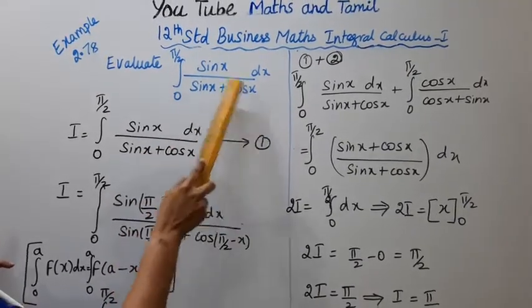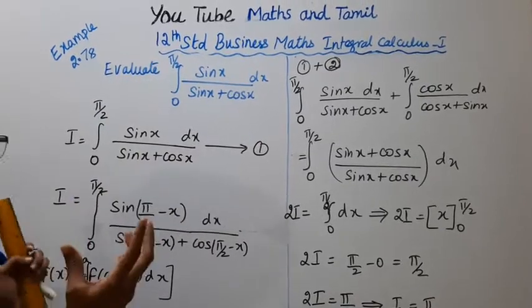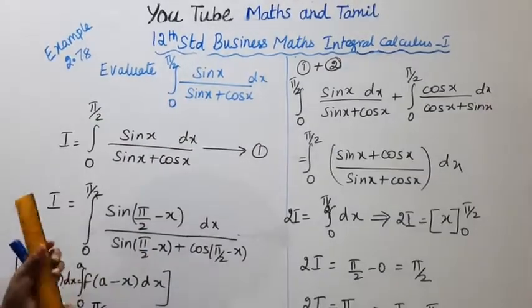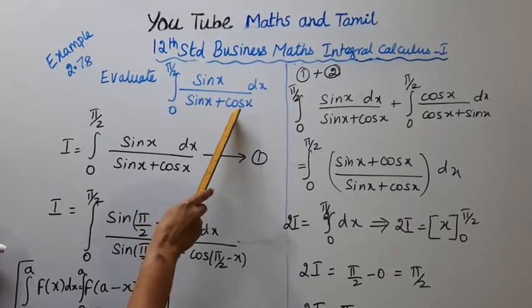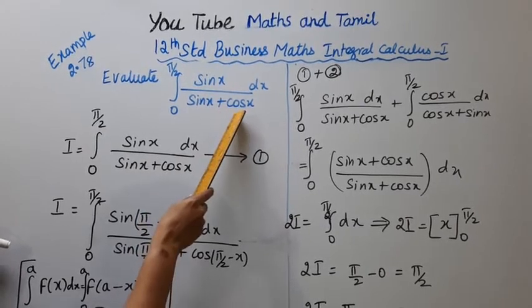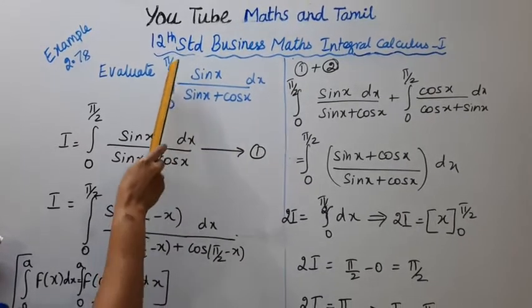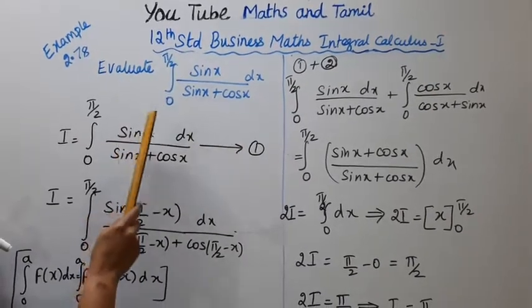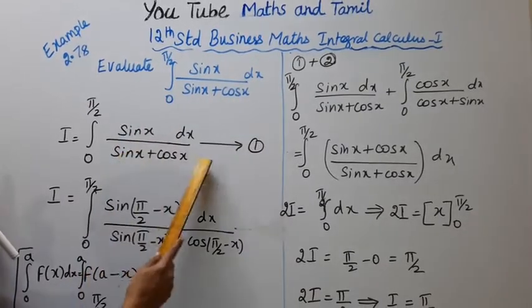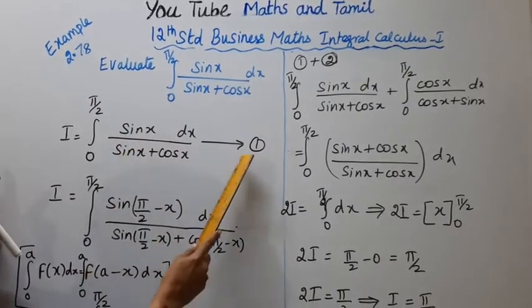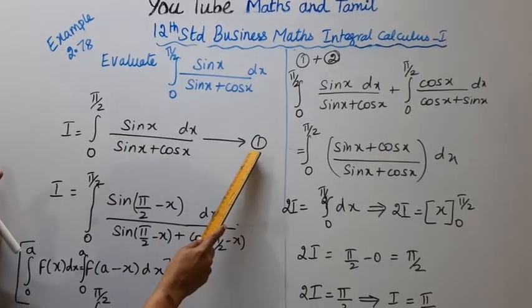In this method, over type — let I equal to integration 0 to π/2 of sin x divided by (sin x plus cos x) dx. This is I.